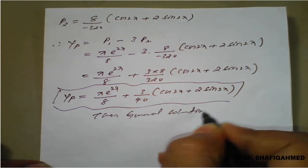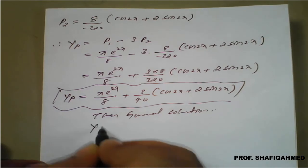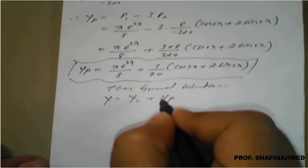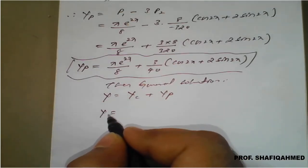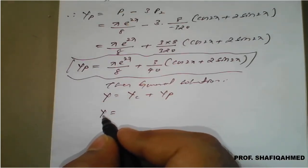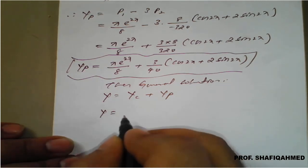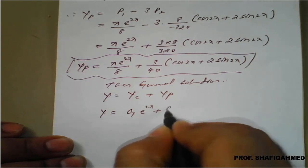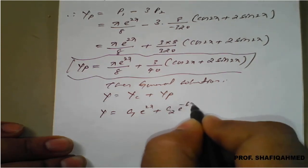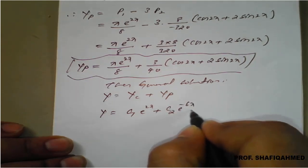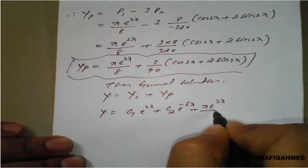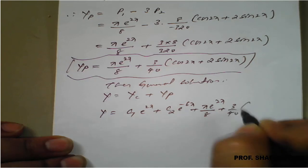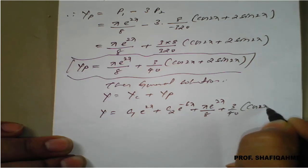The general solution is y equals yc plus yp. So y equals c1 e raised to 2x plus c2 e raised to minus 6x, plus x e raised to 2x upon 8, plus 3 upon 40 into cos 2x plus 2 times sin 2x.